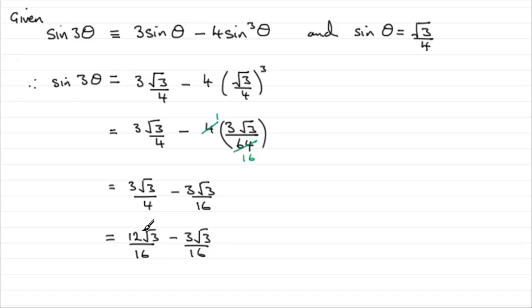And what's that going to give us? Well it's going to give us 9 root 3 over 16. And it doesn't cancel down anymore so that's got to be it.